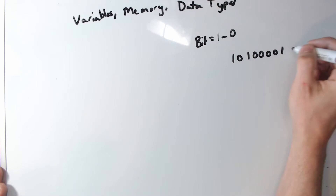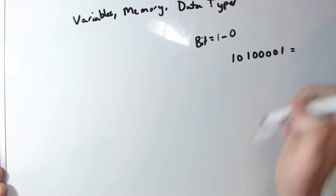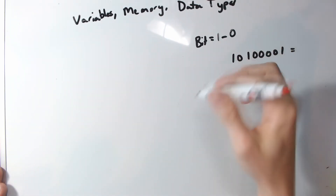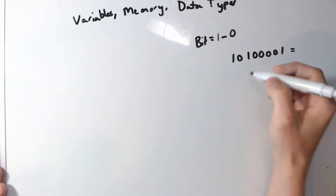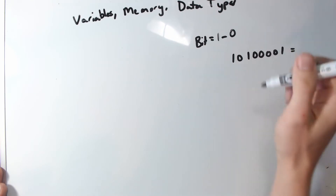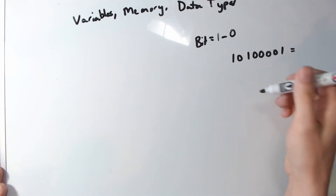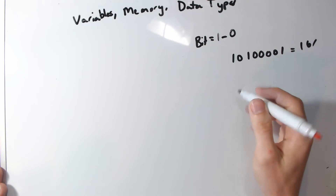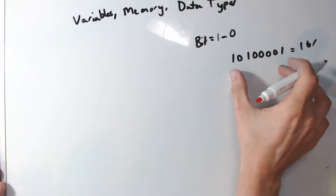That binary string could actually mean, if you were doing an integer — I'll do a video on binary and how to read it if you'd like — but this would be 128 plus 32, which is 160, plus one, so this is actually 161 as a numeric value.